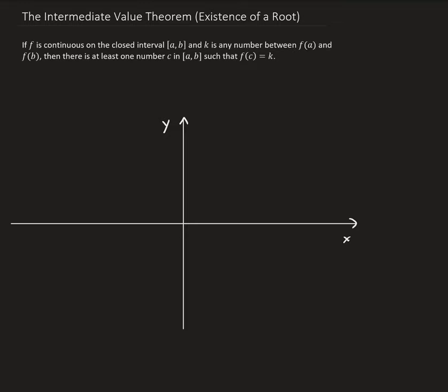In this video, I want to discuss the intermediate value theorem for determining the existence of a root. Here's the theorem: it states that if the function is continuous on the closed interval, let's say a to b, and k is any number between f of a and f of b, then there is at least one number, let's call it c, in the interval a to b, such that the function evaluated at c is equal to k.